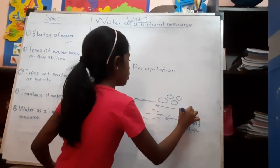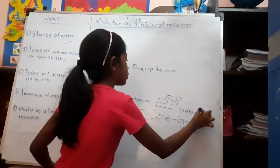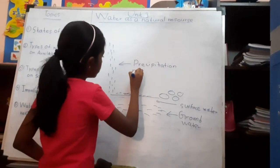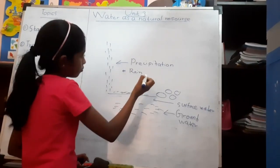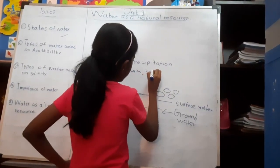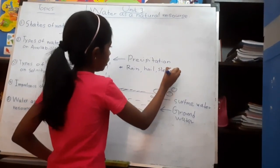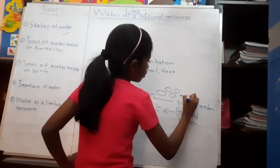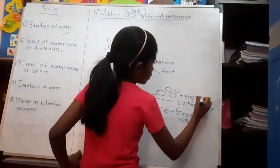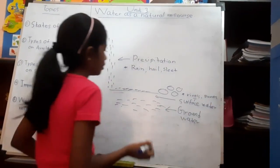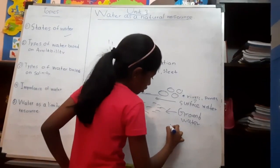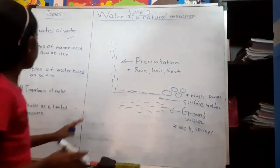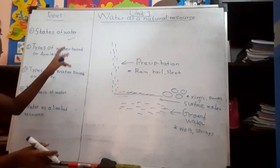This is ground water. This is surface water. Here, examples for precipitation are rain, hail, sleet, like that. Examples for surface water are rivers, ponds, like that. So we discussed the second topic also, types of water based on availability.